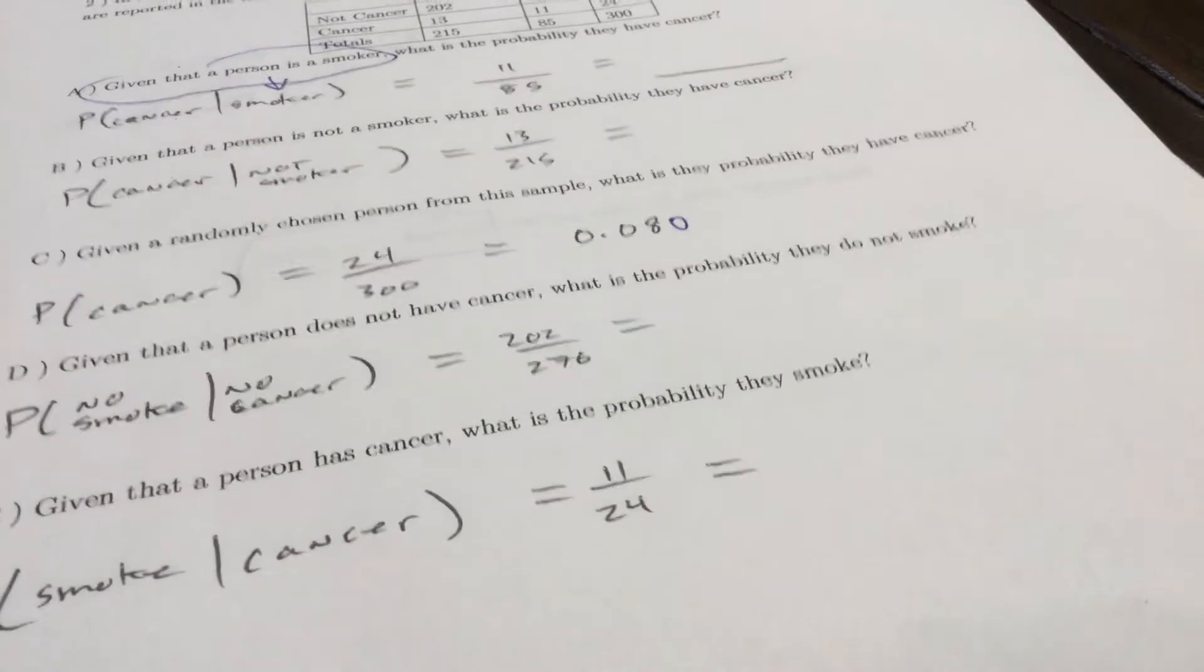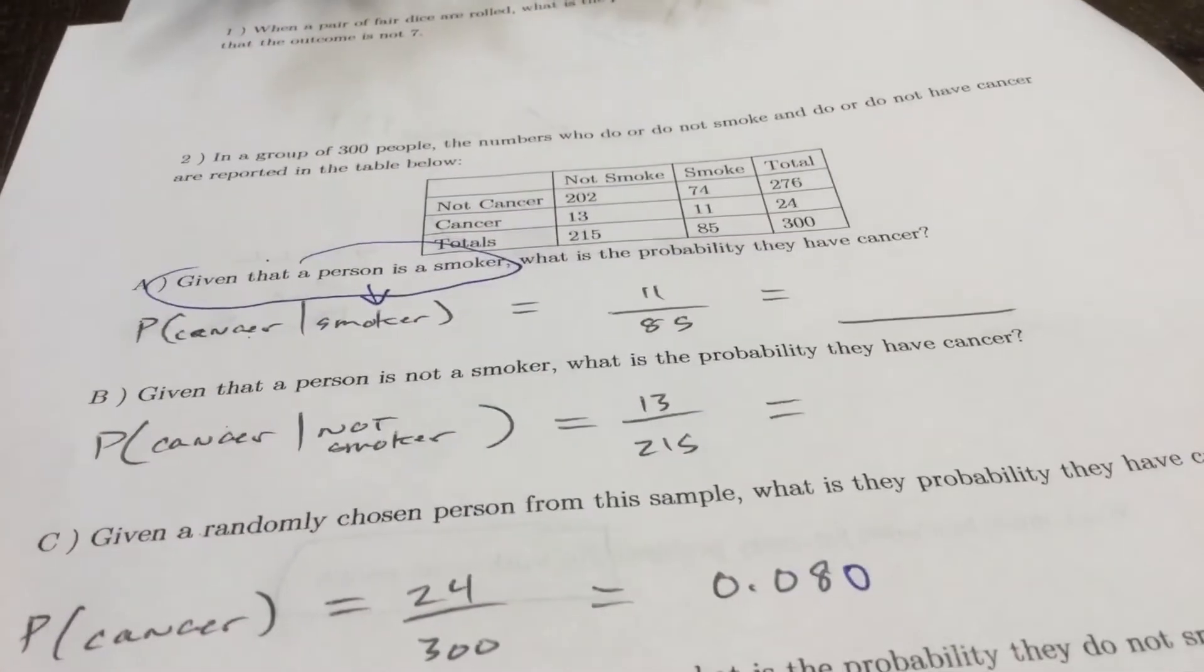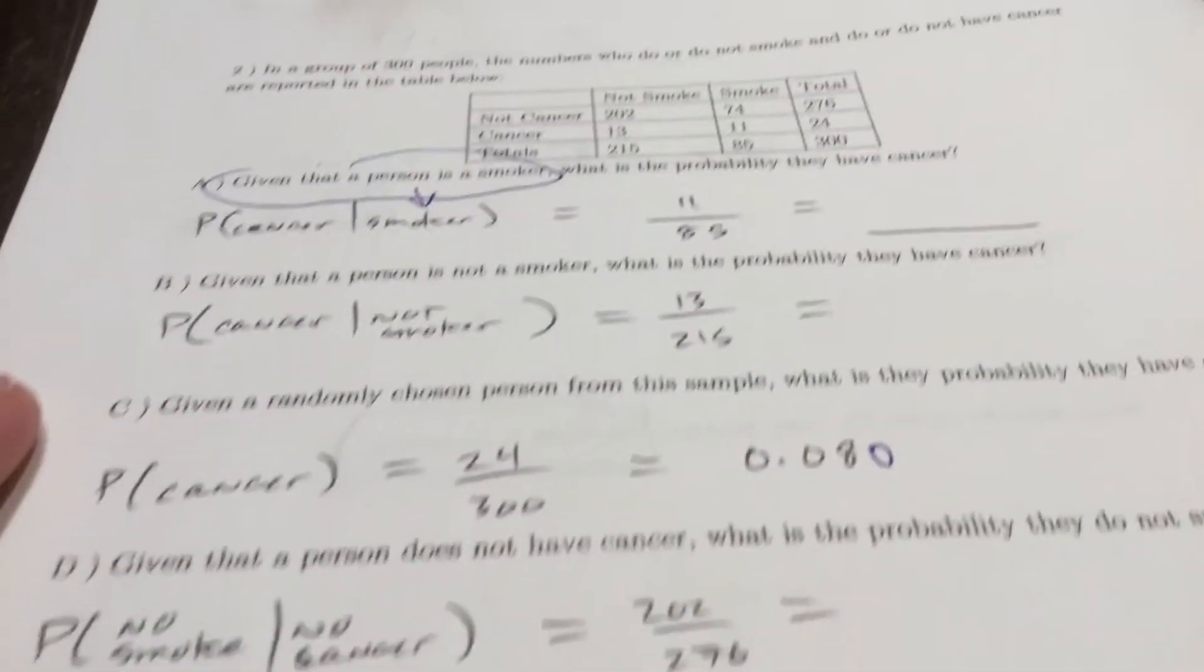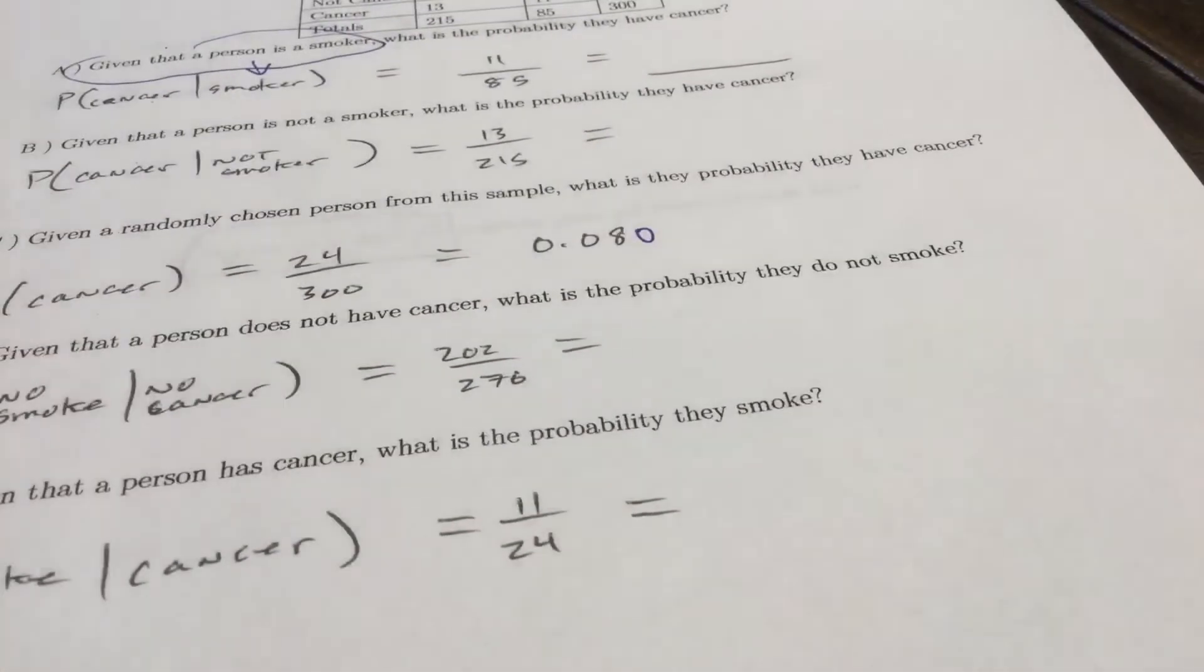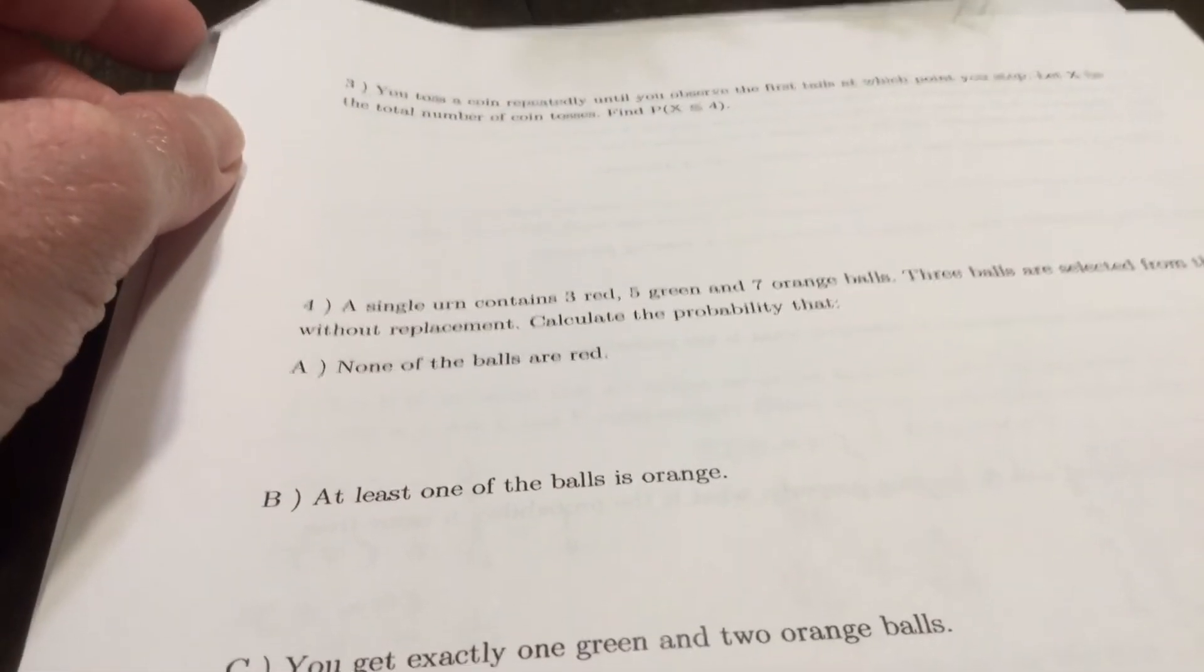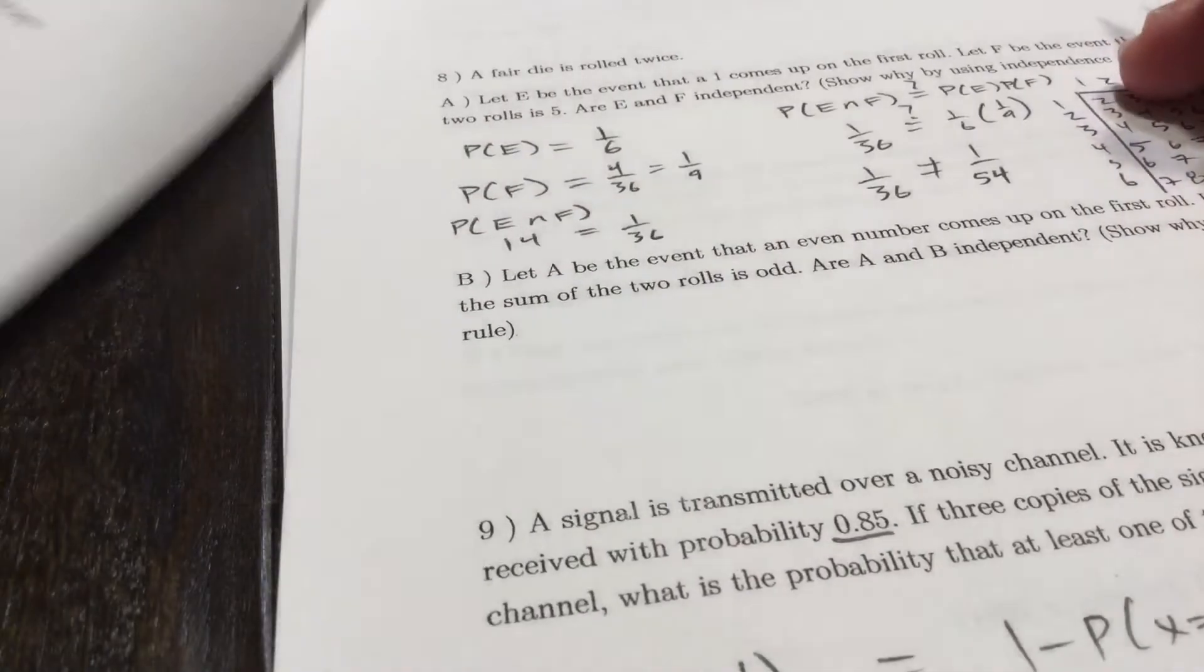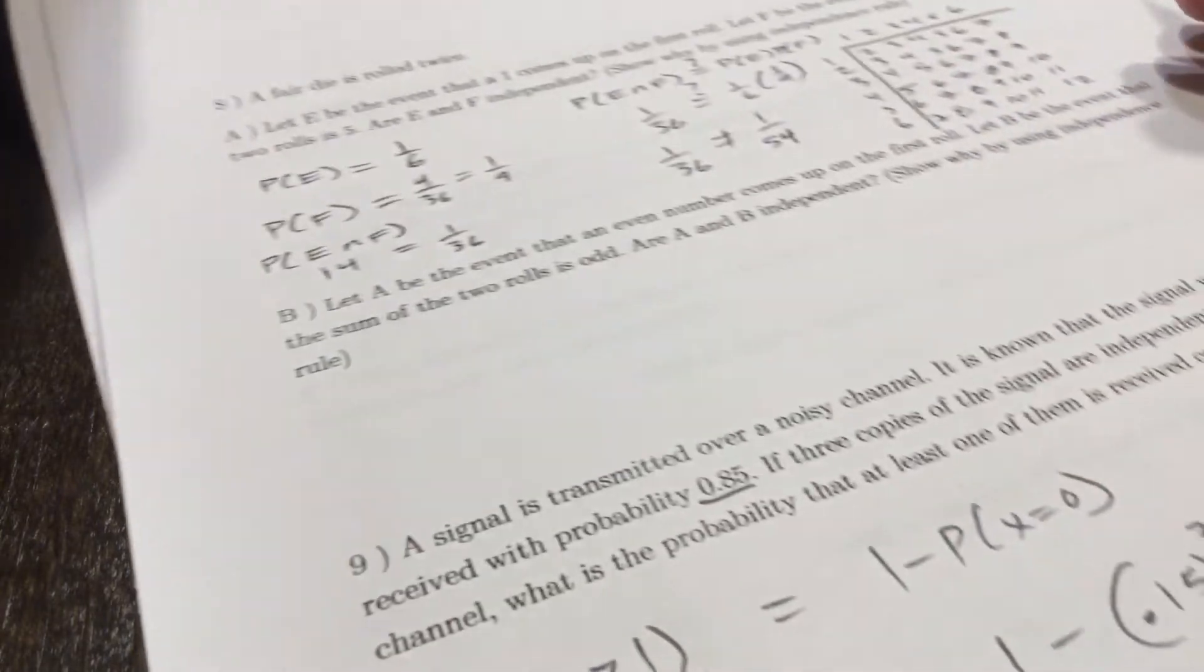Part E: given that the person has cancer, what's the probability they smoke? The denominator is cancer which is 24, and those that smoke, 11. So 11 out of 24. Then we'll talk about three, and we'll talk about four in class as we will with five.